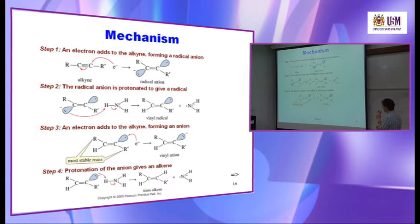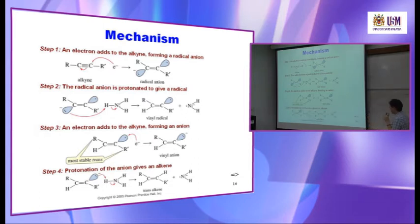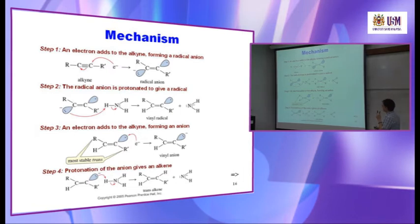The anion attacks another hydrogen from the ammonia. Step four: the lone pair of the anion attacks the H of ammonia, yielding a trans-alkene and another NH2⁻ anion. So there are four steps total: (1) electron attacks carbon forming radical anion, (2) anion is protonated by ammonia giving vinyl radical + NH2⁻, (3) electron attacks radical giving vinyl anion, (4) anion is protonated giving trans-alkene + NH2⁻.